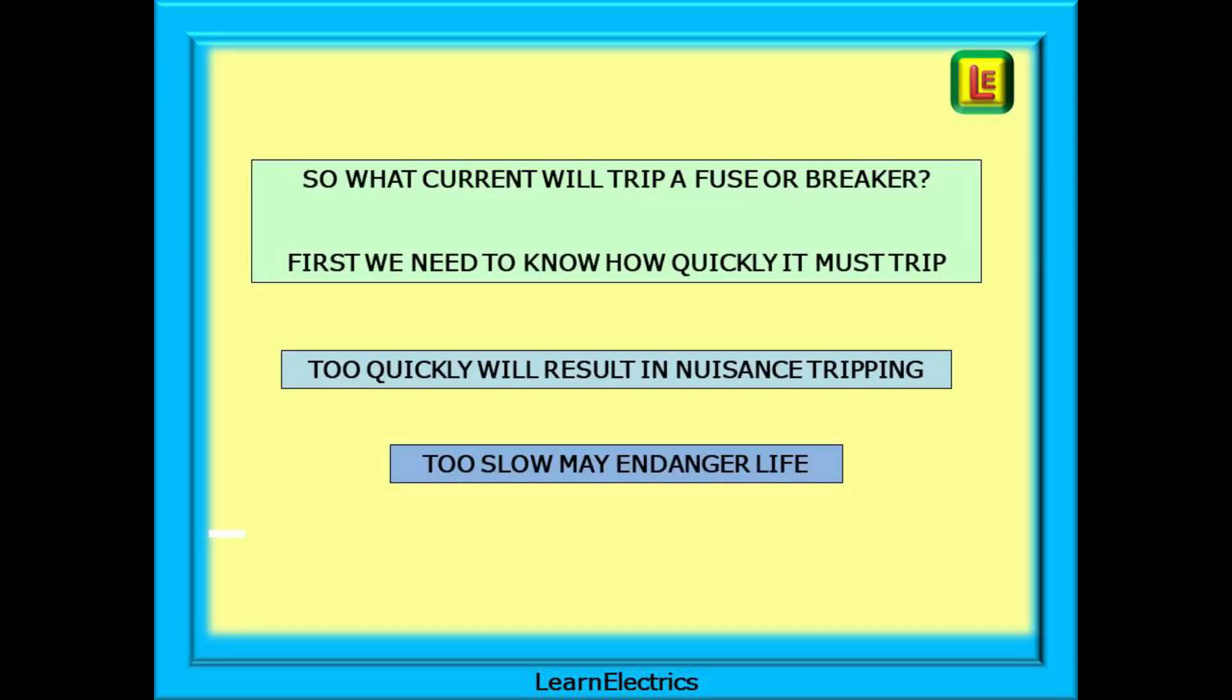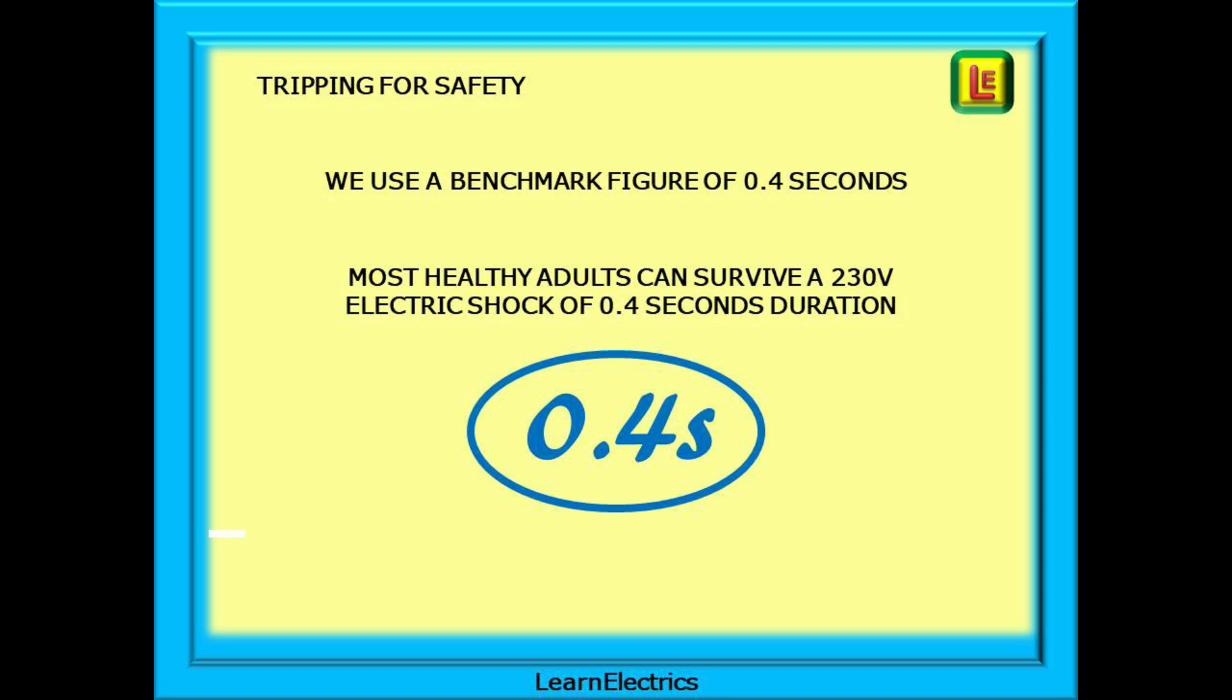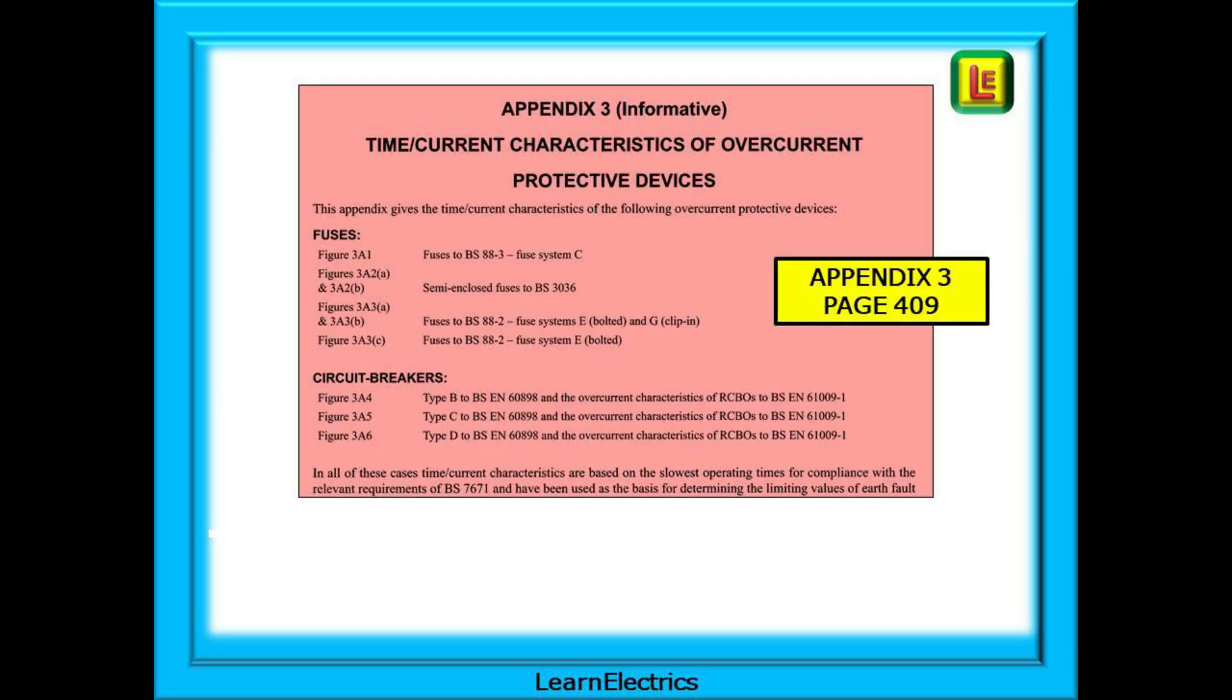So what current will trip a fuse or breaker? First we need to know how quickly it must trip. If it trips too quickly this will result in nuisance tripping and too slow a response might endanger life. We talk about protective devices and tripping for safety and we use a benchmark figure of 0.4 seconds maximum tripping time. This is because most healthy adults can survive a 230 volt electric shock of 0.4 seconds duration.